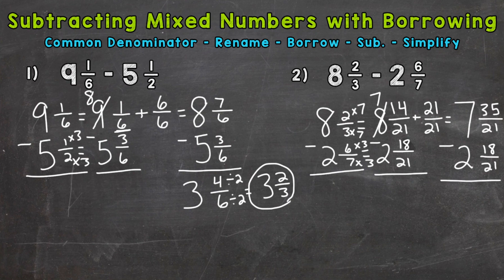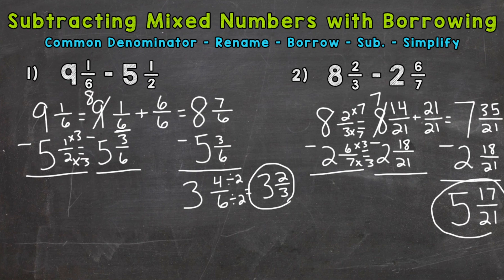Now we can subtract after borrowing. 35 minus 18 gives us 17 twenty-firsts, and for the whole numbers, seven minus two is five. Always look to see if you can simplify the fractional part. 17 and 21 have only one as a common factor, so it is in simplest form. Our final answer is five and 17 twenty-firsts.